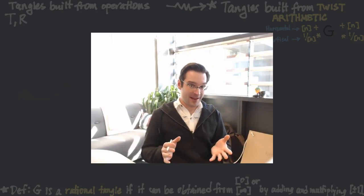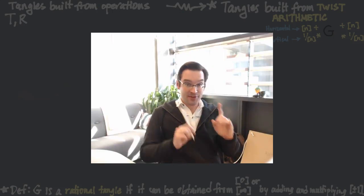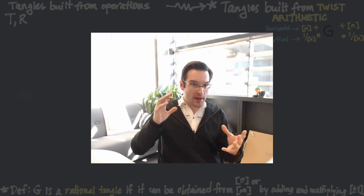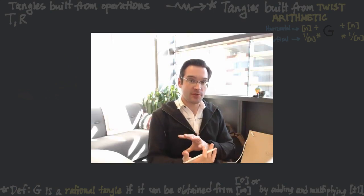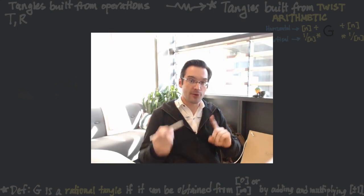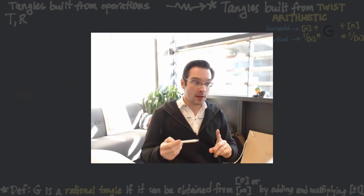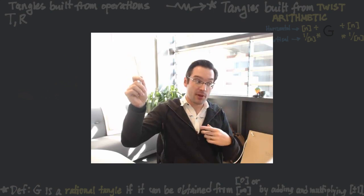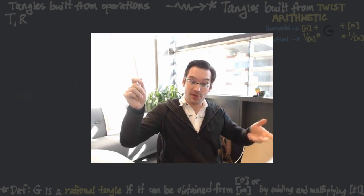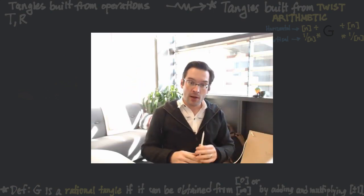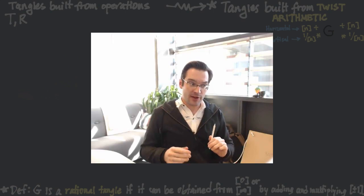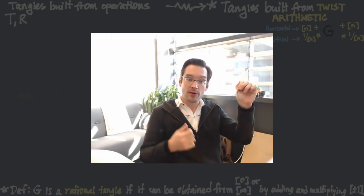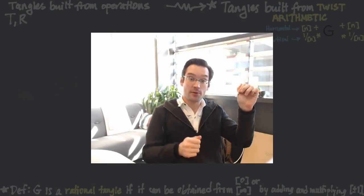You may not have noticed it, but in our last video, where we got an introduction to the arithmetic of rational tangles, we made a significant conceptual shift in how we think about where tangles come from. Initially, we were thinking about rational tangles as things which we can build out of operations — the twist operation and the rotation operation. But in our last video, we made a shift in mindset to thinking about building tangles using arithmetic operations: twist arithmetic.